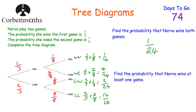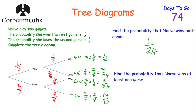The first question asks for the probability that Nova wins both games. That's win-win, which is 1/24.